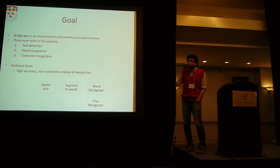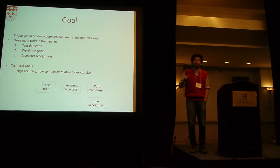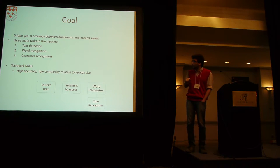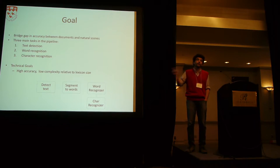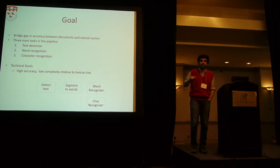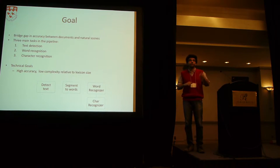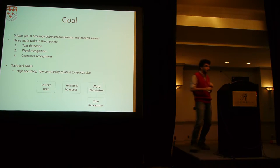The technical goal is high accuracy, but not just that. Usually when people do text recognition, they use lexicons because it's a very confusing problem, and we want low inference complexity relative to lexicon size. Our work bridges the point between highly accurate models and fast models — it is both highly accurate and fast.